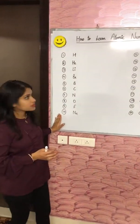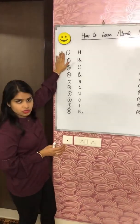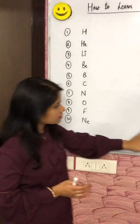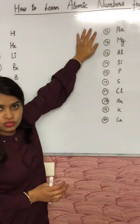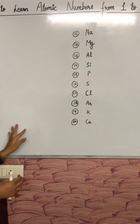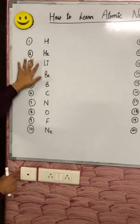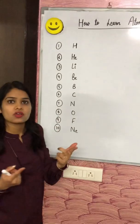Here I have the elements having atomic number from 1 to 10, and in this row I have elements having atomic number from 11 to 20. So what are these elements? First of all, recall them.